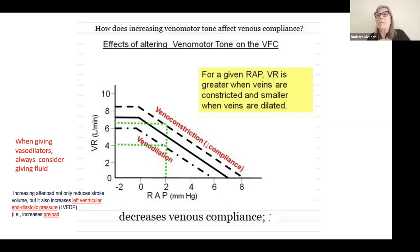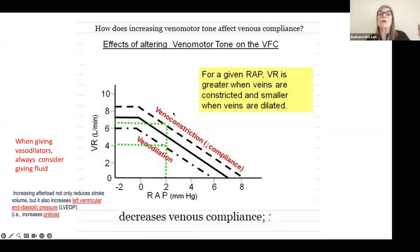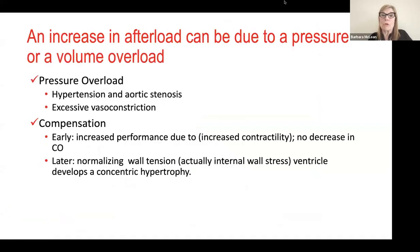We think about this with RV infarct — you never give nitroglycerin without giving a volume load first. And as a reminder: when you increase venomotor or arterial motor tone, arterial tone will significantly limit LV ejection, but it will also increase RV filling because of that enhanced venous return.